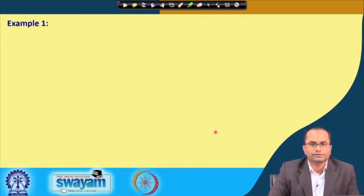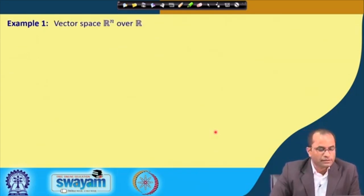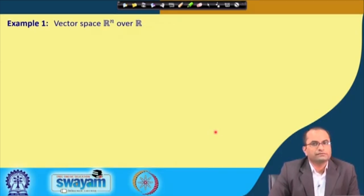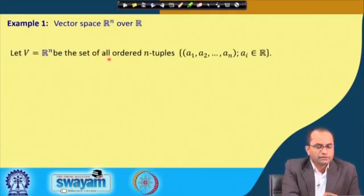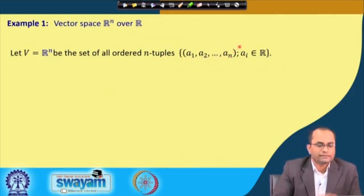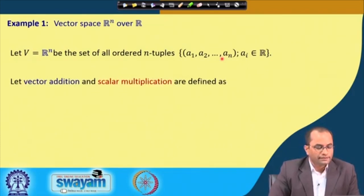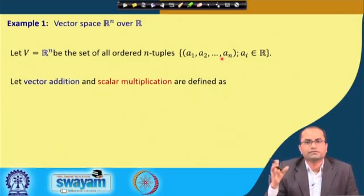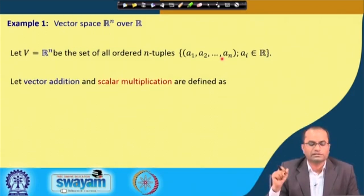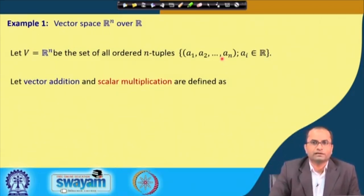Now let us go through some examples to better understand vector spaces. The first example is the vector space R^n over R. R^n is the set of all ordered n-tuples: elements of the form (a1, a2, a3, ..., an) where all the a's are real numbers. The elements of R^n each have n components, and we need to define vector addition and scalar multiplication to say it is a vector space with respect to these operations and the set of real numbers R.